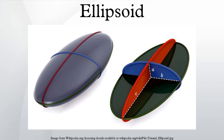Fluid properties: the ellipsoid is the most general shape for which it has been possible to calculate the creeping flow of fluid around the solid shape. The calculations include the force required to translate through a fluid and to rotate within it. Applications include determining the size and shape of large molecules, the sinking rate of small particles, and the swimming abilities of microorganisms.